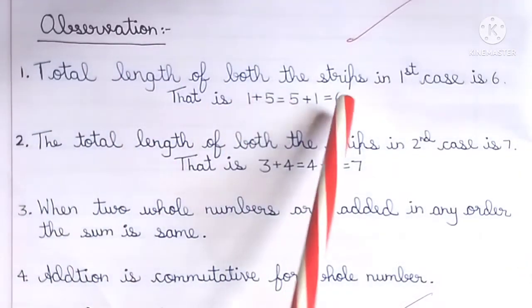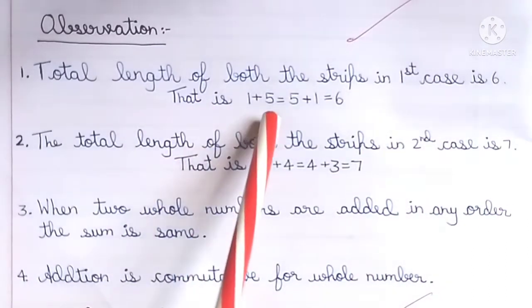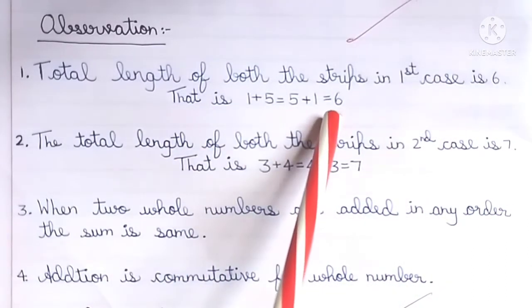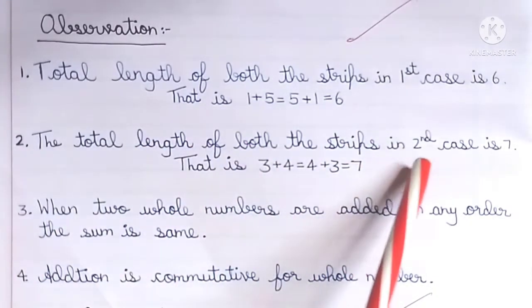Observation: Total length of both strips in first case is 6. That is, 1 plus 5 equals 5 plus 1 equals 6.